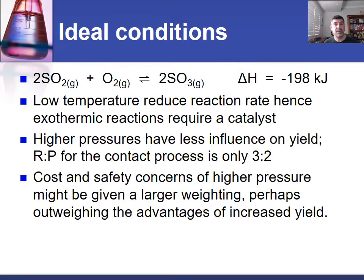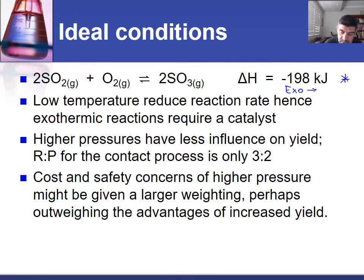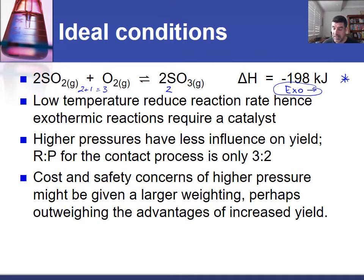The specific reaction we're looking at is this one here. Firstly, it's exothermic in the forward direction and therefore releases heat energy. In terms of the number of gaseous molecules, we have two plus one — three on the reactant side — and just two on the product side. Since it's exothermic, the forward direction is favored by lower temperatures, and lower temperatures will therefore increase the yield.